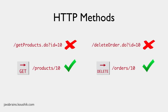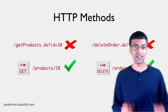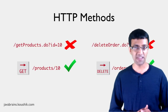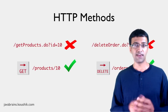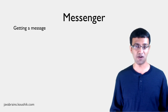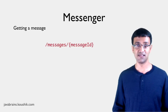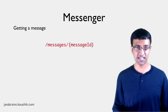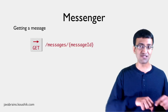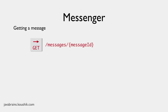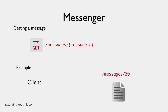The URI tells you what entity or resource is being operated upon, and the method tells you what that operation is. So let's look at some scenarios in our messenger application. Getting a message should be obvious now — we know the resource URI for a particular message. To GET the message, just do a GET request for that URI. So a GET for /messages/20 returns message ID 20.